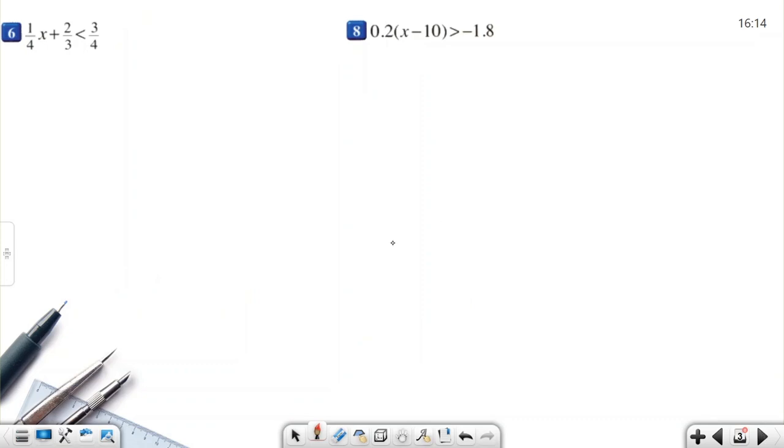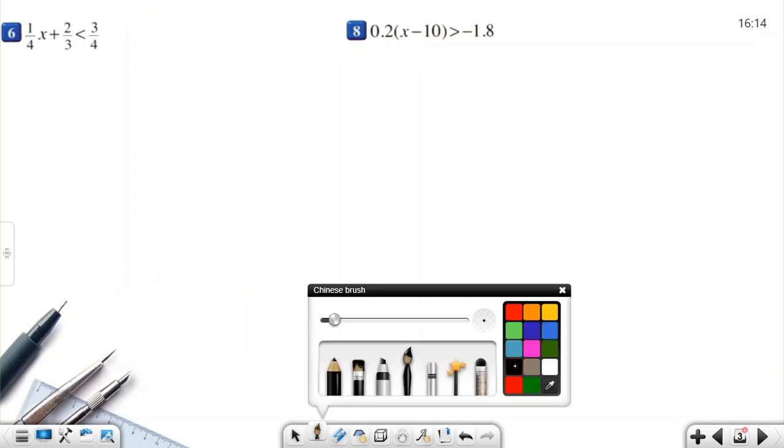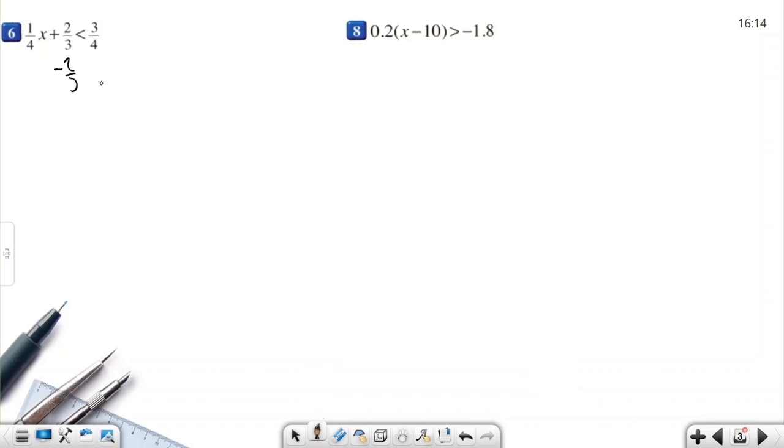Okay, let's solve more examples. This time we have fractions here. Nothing changed. Subtract 2 over 3. Let me rewrite the question: 1 over 4x plus 2 over 3 less than 3 over 4. So negative 2 over 3 minus 2 over 3. 2 over 3 minus 2 over 3 will be 0. 1 over 4x less than.